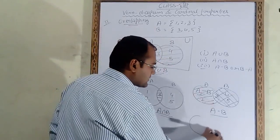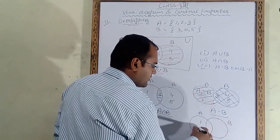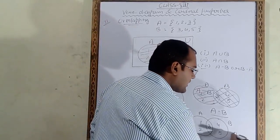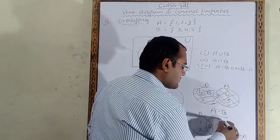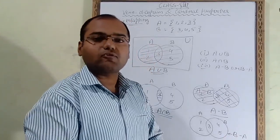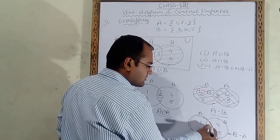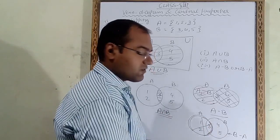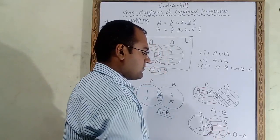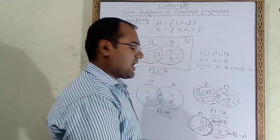For B minus A, draw the same overlapping figure with 1, 2, 3, 4, 5. B minus A means from B we remove A. We do not take the A circle's overlapping part, so we shade only the exclusive right portion of circle B containing 4 and 5. This part represents B minus A.